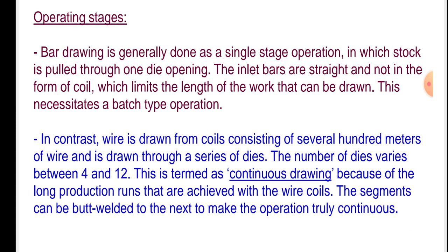In contrast, wire is drawn from coils consisting of several hundred meters of wire and is drawn through a series of dies. The number of dies varies between 4 to 12. This is termed continuous drawing because of the long production runs achieved with the wire coils. The segments can be butt welded to the next to make the operation truly continuous.